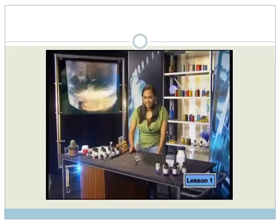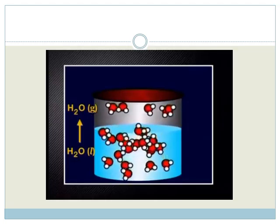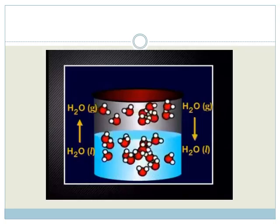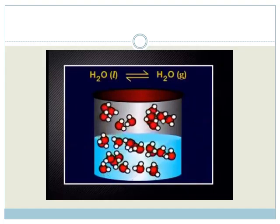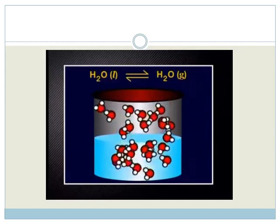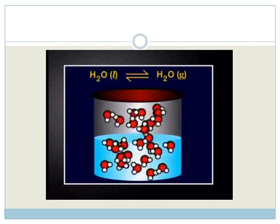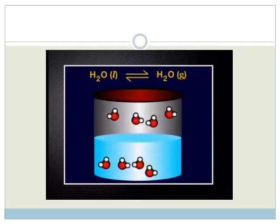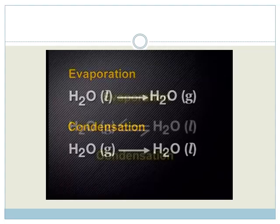But when we put a lid on the container, we prevent the water molecules from escaping. The gas region above the liquid becomes very crowded with water molecules, so the number of molecules evaporating decreases. At the same time, the number of water molecules returning to the liquid increases, until the rate of evaporation equals the rate of condensation. Overall, the number of molecules in the air above the liquid is not changing. We call this phase equilibrium and represent it by combining the two equations.